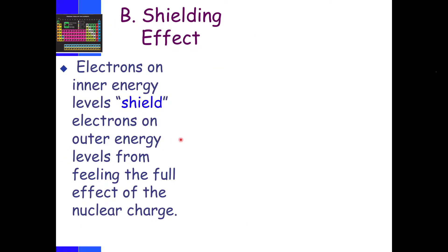The shielding effect is that the electrons on the inner energy levels will shield the outer electrons from feeling the full effect of the nuclear charge. Essentially, the core electrons are going to shield the valence electrons.